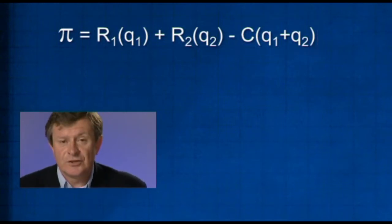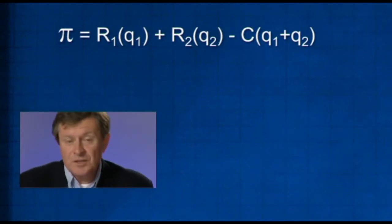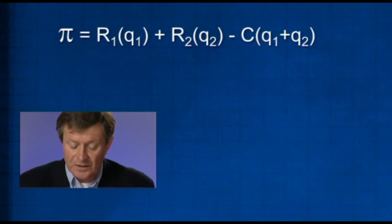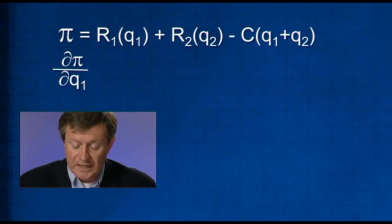So let's have a look at the conditions that the firm will apply for maximizing profits here. In order to maximize profits π, the firm will have to ensure that the following pair of conditions is satisfied. First of all, dπ/dQ1 has to be equal to zero.